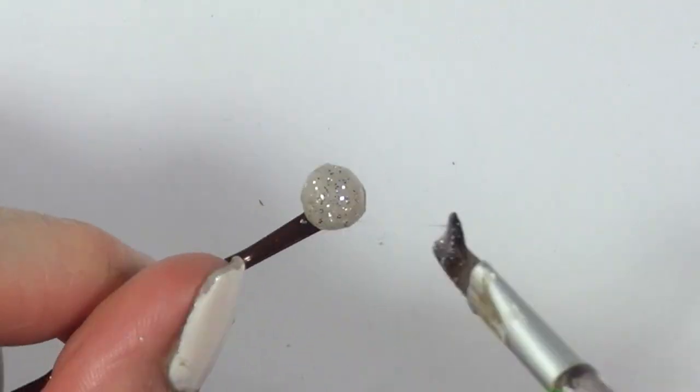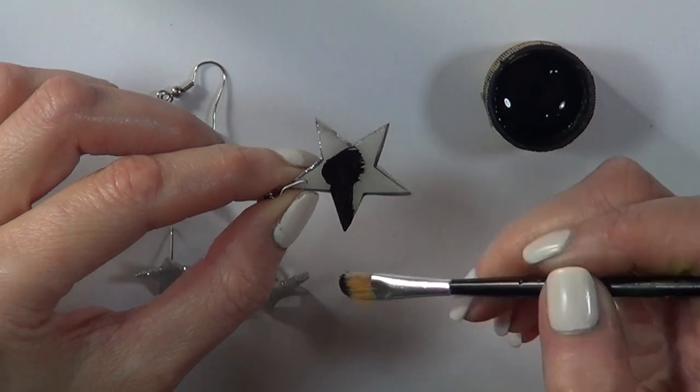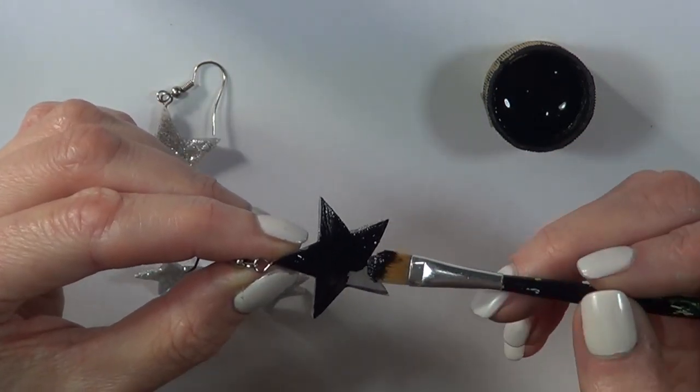So for the back of my earrings, I'm just going to be using some black acrylic paint and I'm just going to paint it, giving this few coats.